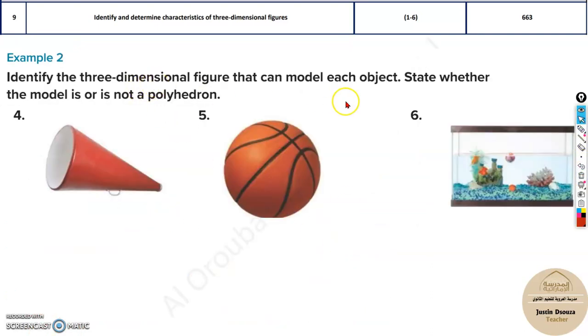And one more thing is just to state whether the model is a polyhedron or no. This is a cone. It's not a polyhedron. This is a sphere, again, not a polyhedron. Yes, this is a polyhedron. It is a rectangular prism.